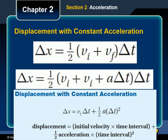If you want to know the displacement of an object moving with constant acceleration over some certain time interval, you can obtain other useful expressions for displacement by substituting the expression for final velocity into the expression for displacement. On the screen here, we can see the equation for displacement at the top. In the second equation, we substitute the expression for final velocity with constant acceleration, and simplifying gives us the equation for displacement with constant acceleration.